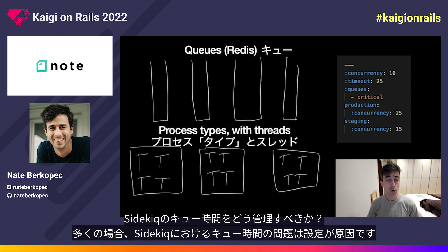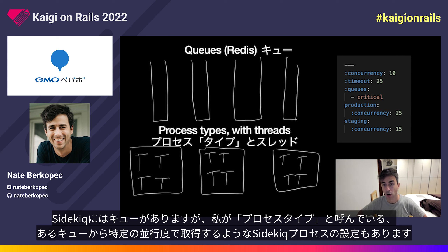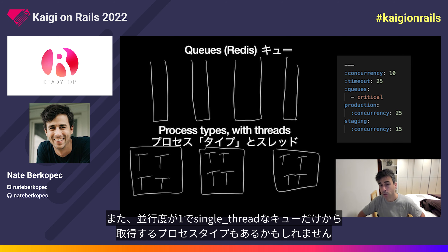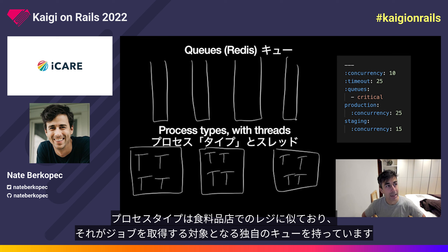How should you manage queue time in Sidekiq? Often queue times in Sidekiq are self-inflicted. It's easy to create an inefficient queuing scheme and end up with a massive queue time problem you've inflicted on yourself. In Sidekiq, we have queues, but we also have what I call process types — a configuration of a Sidekiq process that will consume specific queues at a specific concurrency. For example, one process type is set up with concurrency 10, consuming only from the critical queue, and in production uses a concurrency of 25. A different process type might consume a single-thread queue with a concurrency of one.